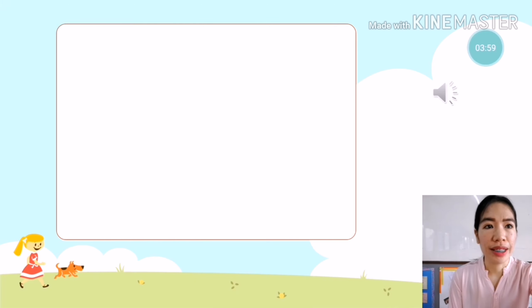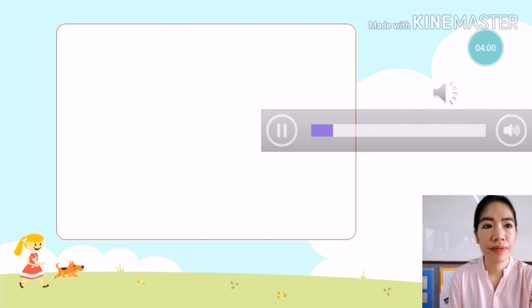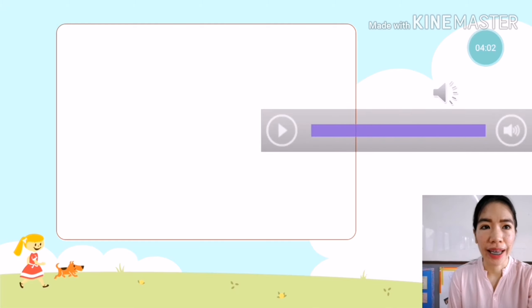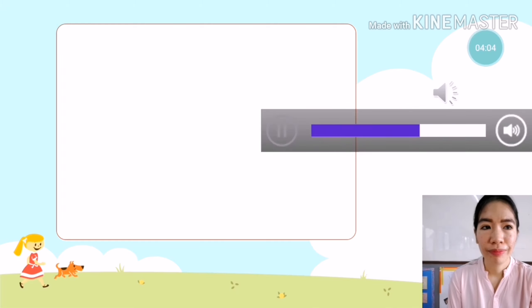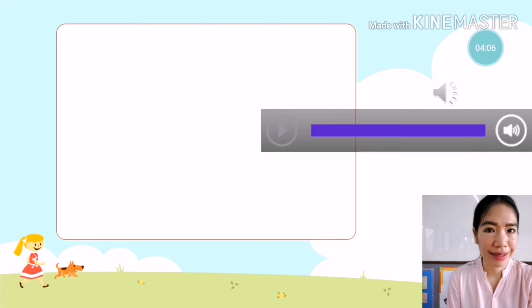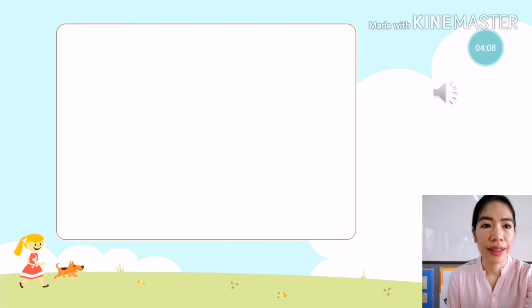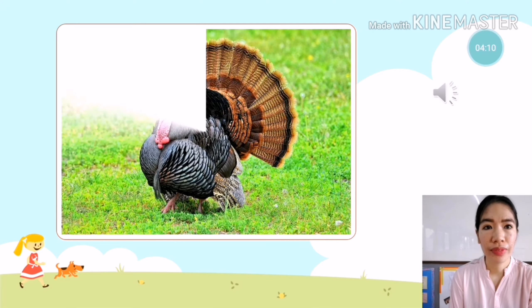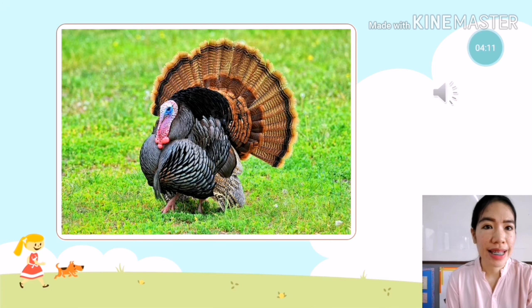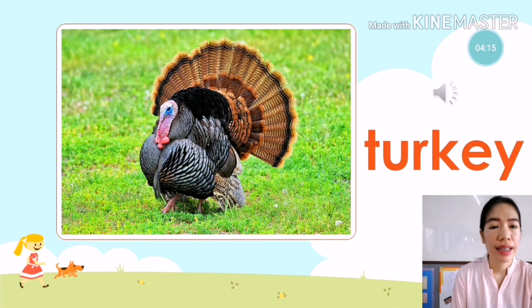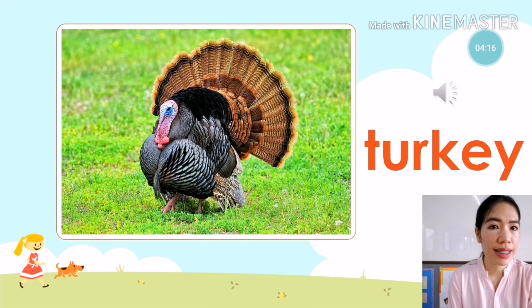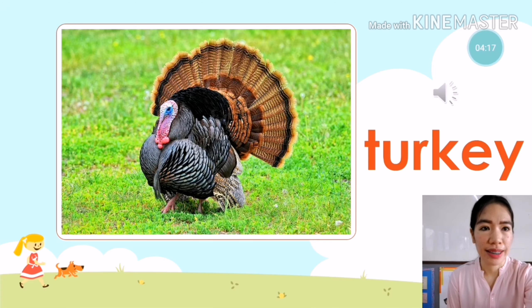The next animal is — what animal is it? Let's find out. It's a turkey. Turkey. You're going to say: it is a turkey.